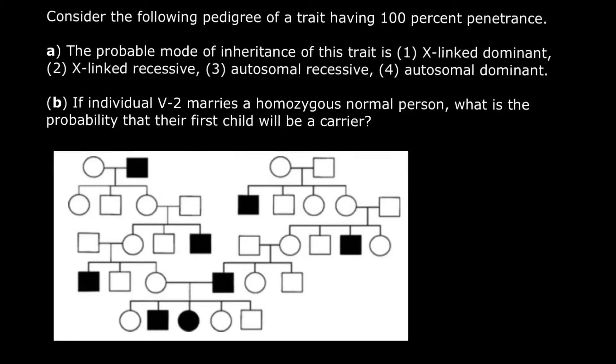Hello and welcome to Nikolai's genetics lessons. Today's problem is: consider the following pedigree of a trait having 100% penetrance.